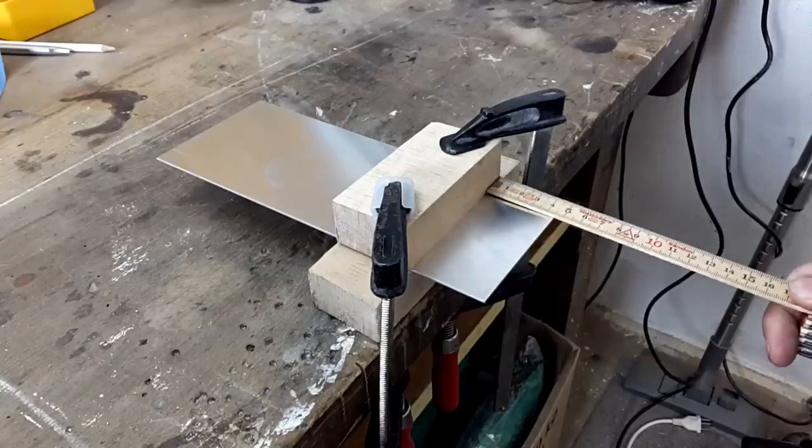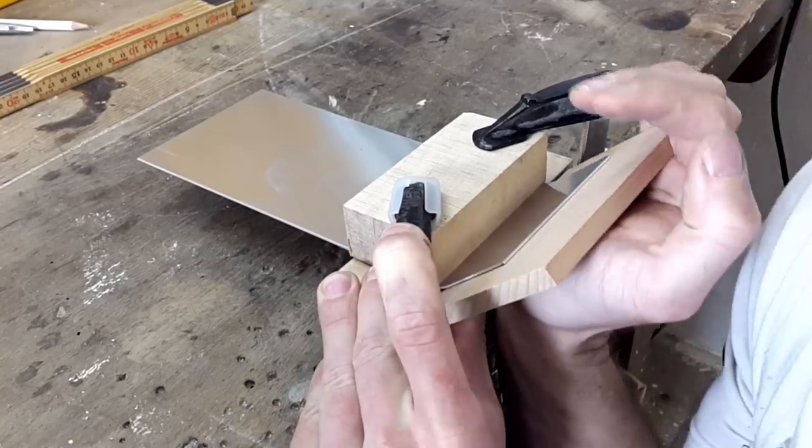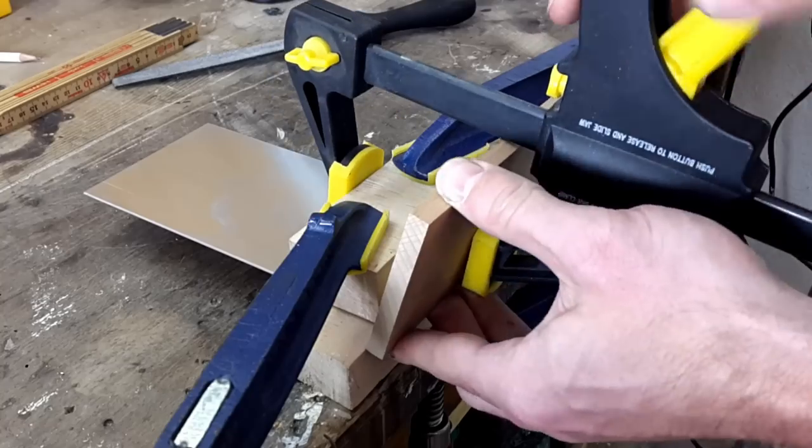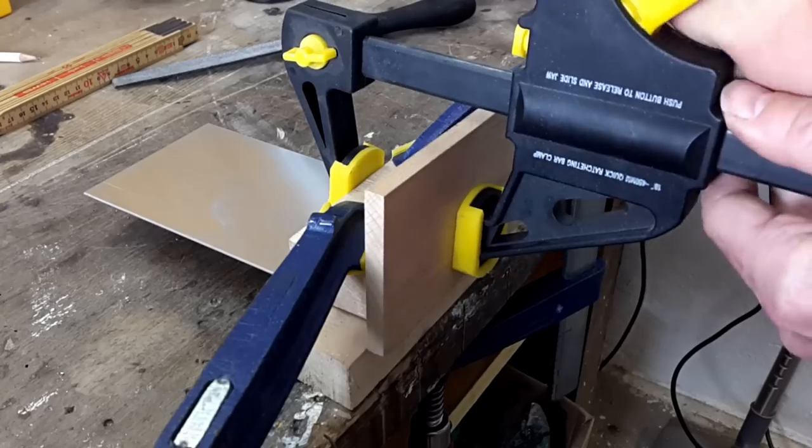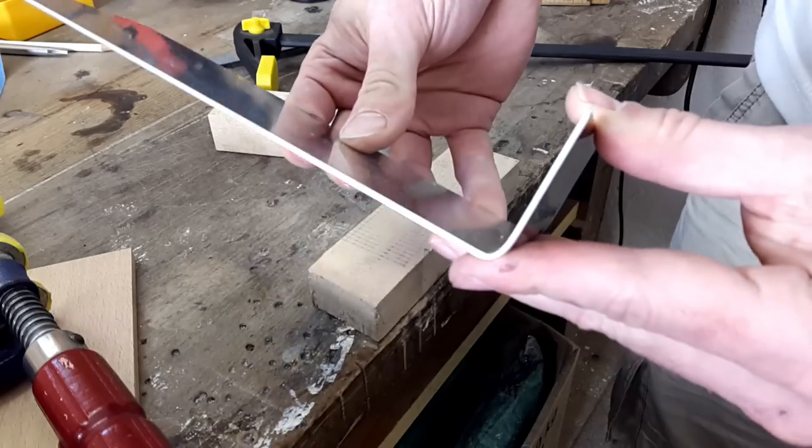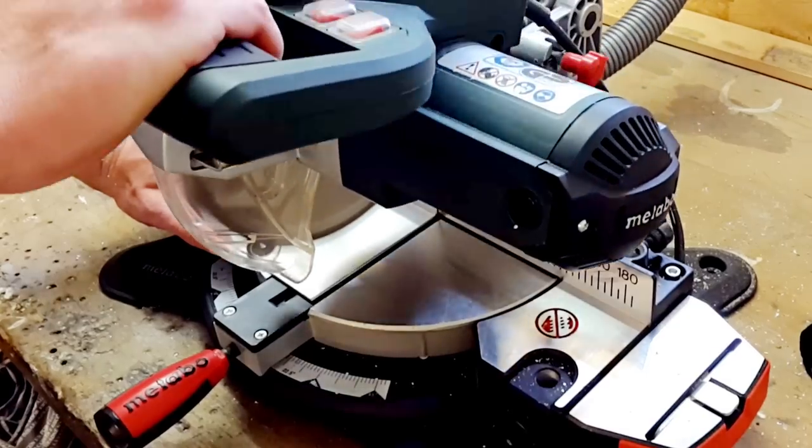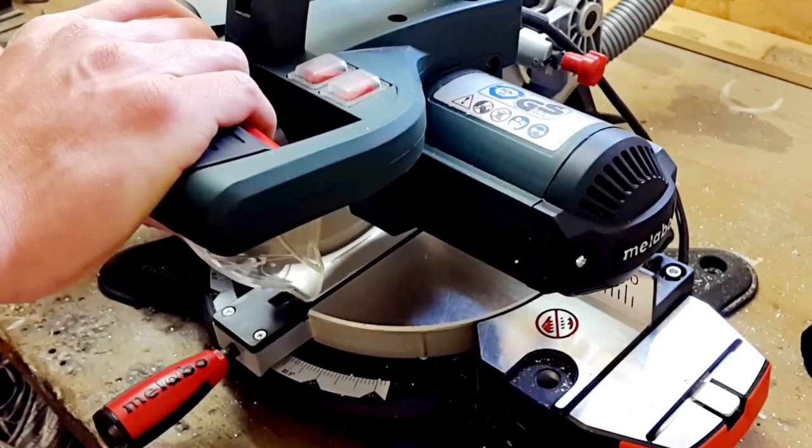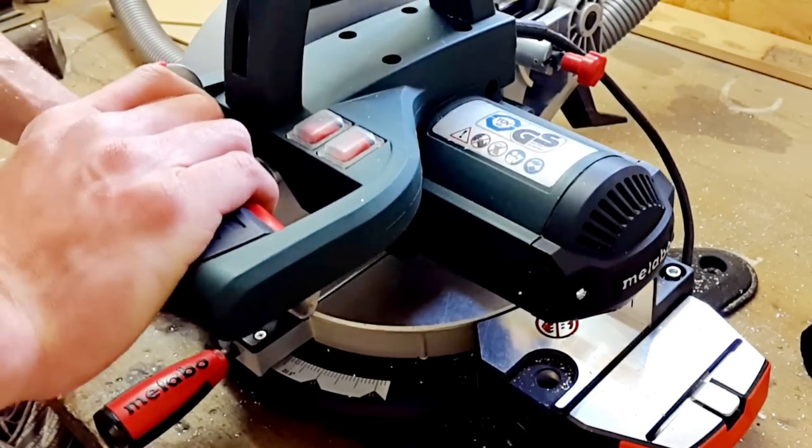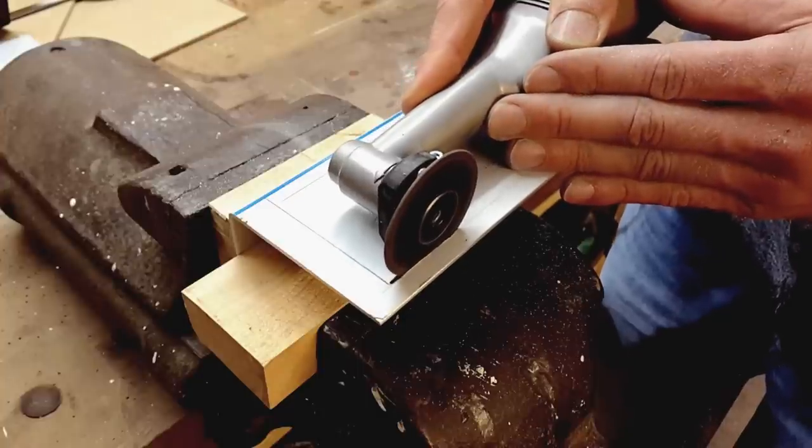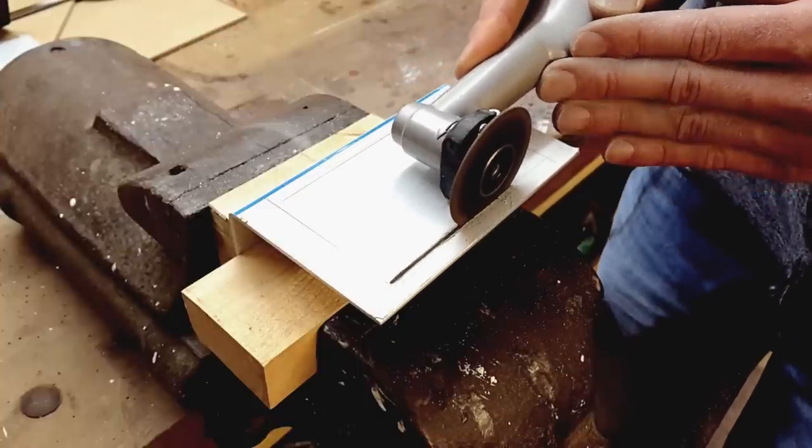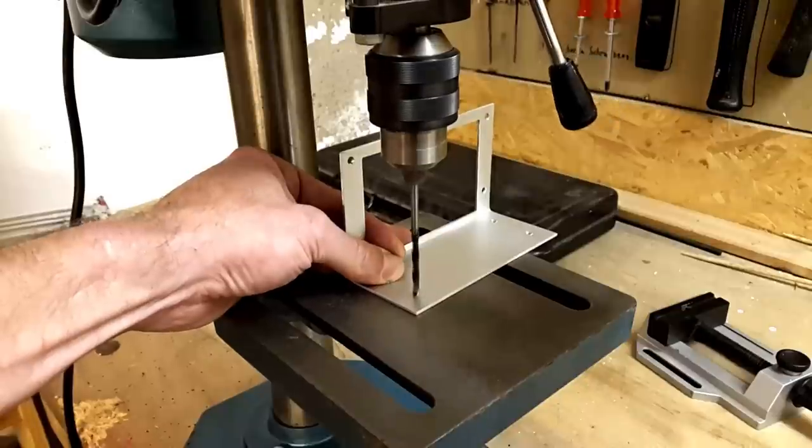I started with making the brackets for the SSD bay and the power supply from two millimeter thick aluminum sheets which I had to bend to a ninety-degree angle and then cut them to the right size with a mitre saw. Next, I made the necessary cutouts and drilled the required holes for mounting the brackets.